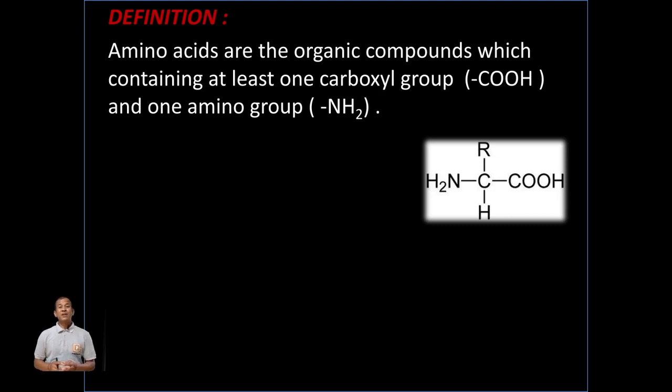The first one, amino acid definition. So, we know very well that acid is determined by the presence of the H plus ion or proton. Similarly, the base is identified by the OH minus ions.